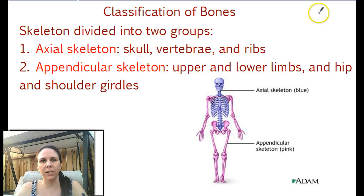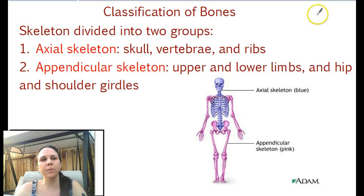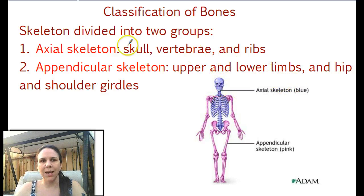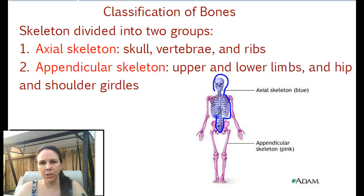This is just a little beginning intro into bones — classification of bones. Bones come in two categories depending on where they're located. We have the axial skeleton, which includes the cranium, the vertebrae, the ribs, and all the way down the vertebral column to the sacrum and back up around. So everything that includes your trunk is the axial skeleton.